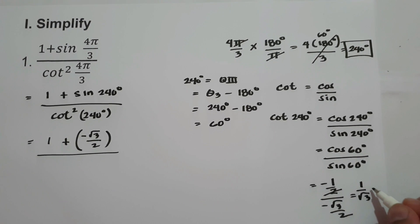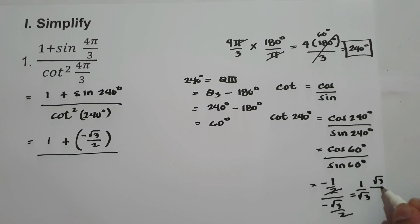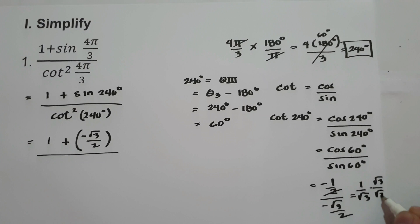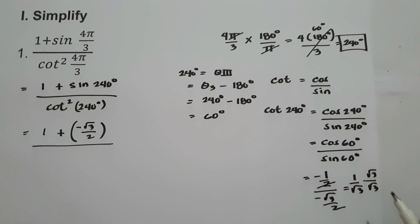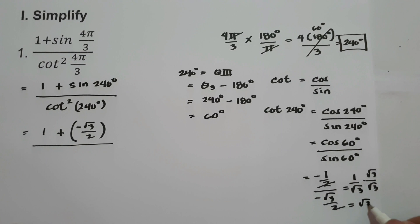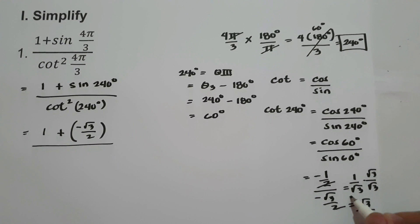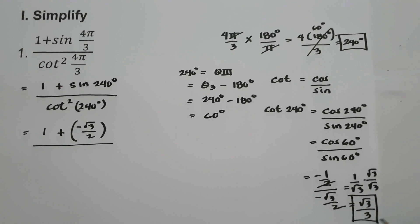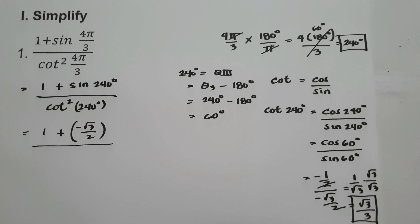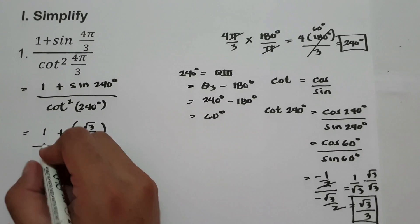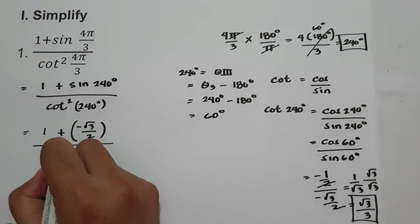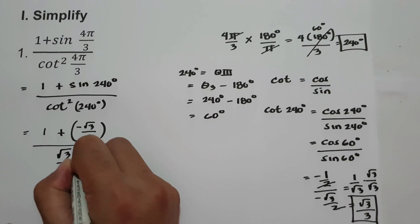Let us rationalize by multiplying numerator and denominator by square root of 3. We get 1 times square root of 3, which is square root of 3. And square root of 3 times square root of 3 is square root of 9, which equals 3. So cotangent 240 degrees in quadrant 3 is square root of 3 over 3.